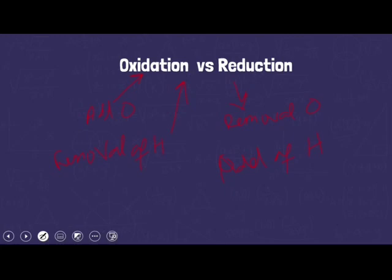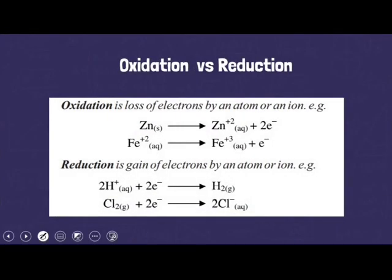Let's move to the third type of oxidation-reduction definition, which is on the basis of gain and loss of electrons. On this basis, oxidation is defined as the loss of electrons by an atom or an ion — if any ion or atom loses an electron, we call that oxidation. Conversely, the addition of electrons to any atom or ion is called reduction. In oxidation, a positively charged species is gained; in reduction, a neutral atom or negatively charged species is obtained.